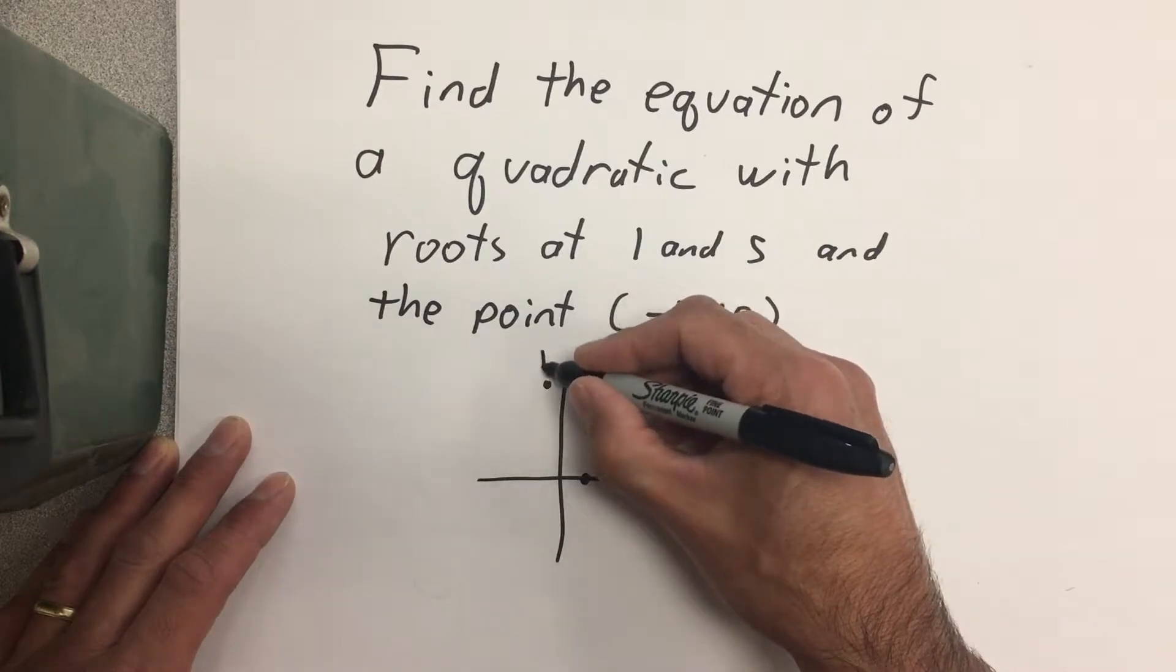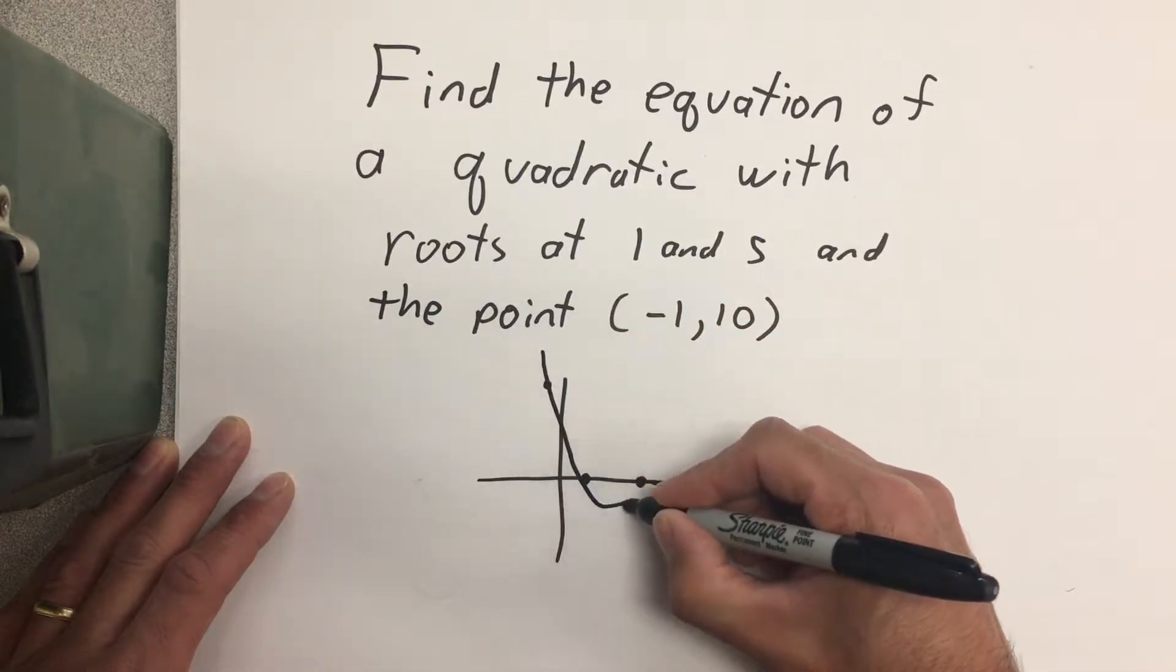So our quadratic, when we graph it, its parabola is going to look like this.